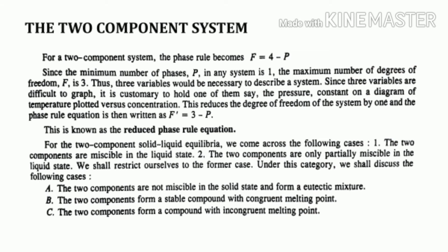So far we have discussed one-component systems; now we move to two-component systems. Applying the phase rule to a two-component system gives F = 4 − P, obtained by substituting C = 2. Since the minimum number of phases is one, the maximum degrees of freedom is three. Because three variables are difficult to graph, it is customary to hold pressure constant, plotting temperature versus concentration, which reduces degrees of freedom by one.